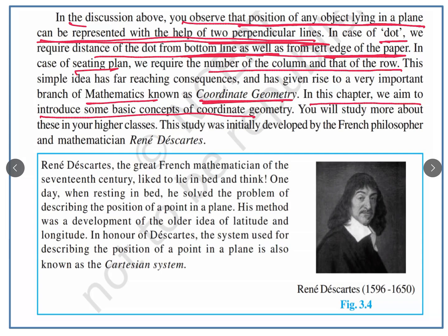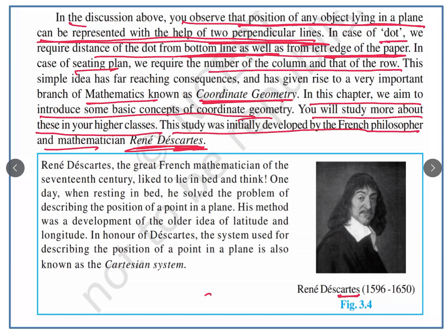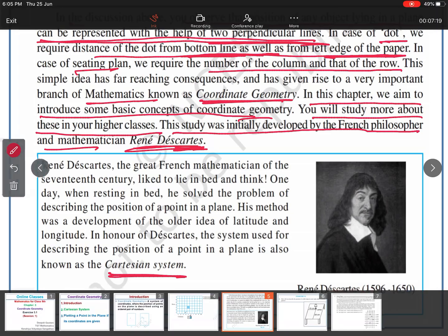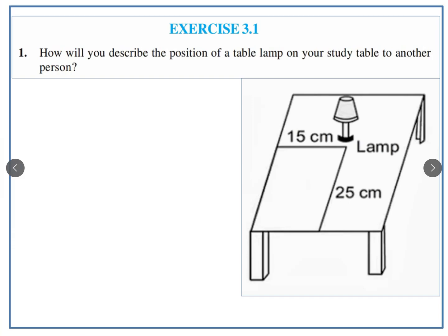In this chapter we aim to introduce some of the basic concepts of coordinate geometry. You will study more about these in higher classes — in class 10 and then in classes 11 and 12 more deeply. This study was initially developed by a French philosopher and mathematician named René Descartes. On his name, this coordinate system is called the Cartesian system.